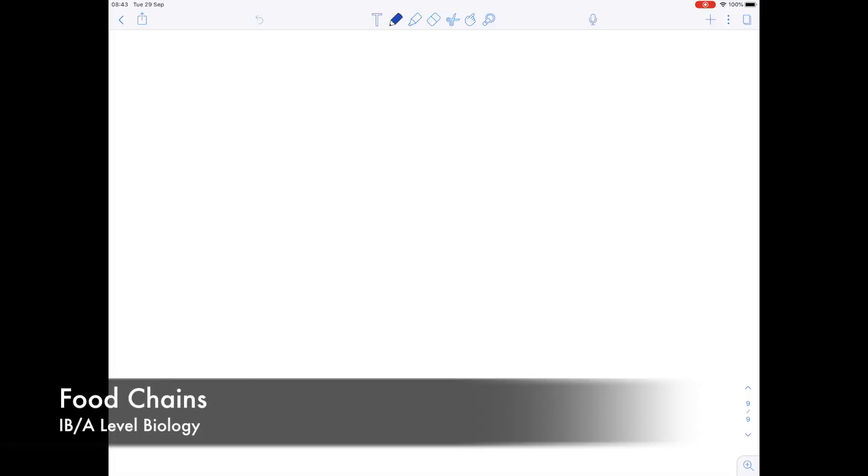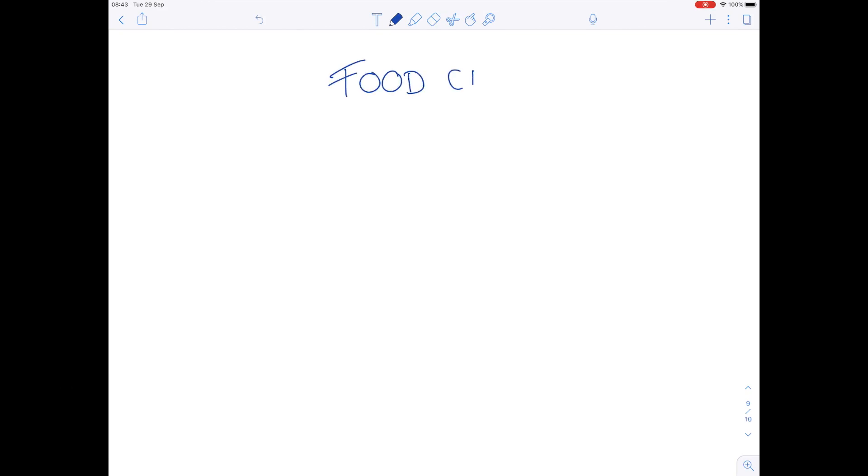In this A-level IB biology video, I'm going to be discussing the topic of food chains. Let's start with a simple one: grass, which is eaten by a grasshopper. The grasshopper is eaten by a frog, and the frog is finally eaten by a python, which is a type of snake.